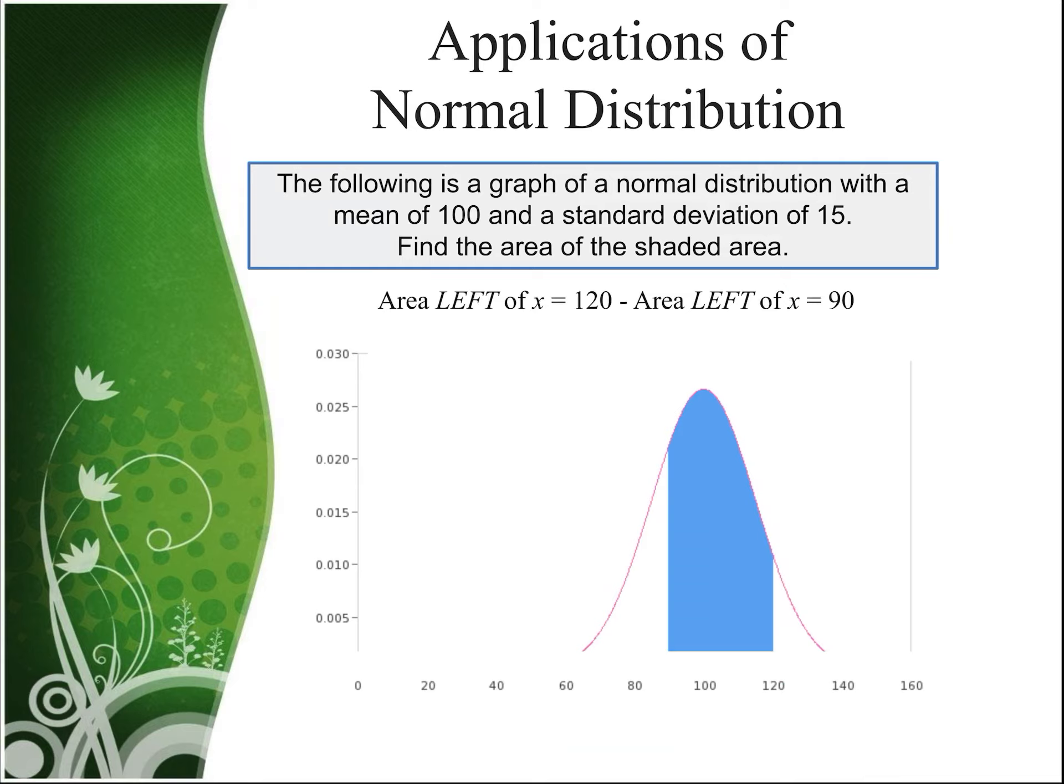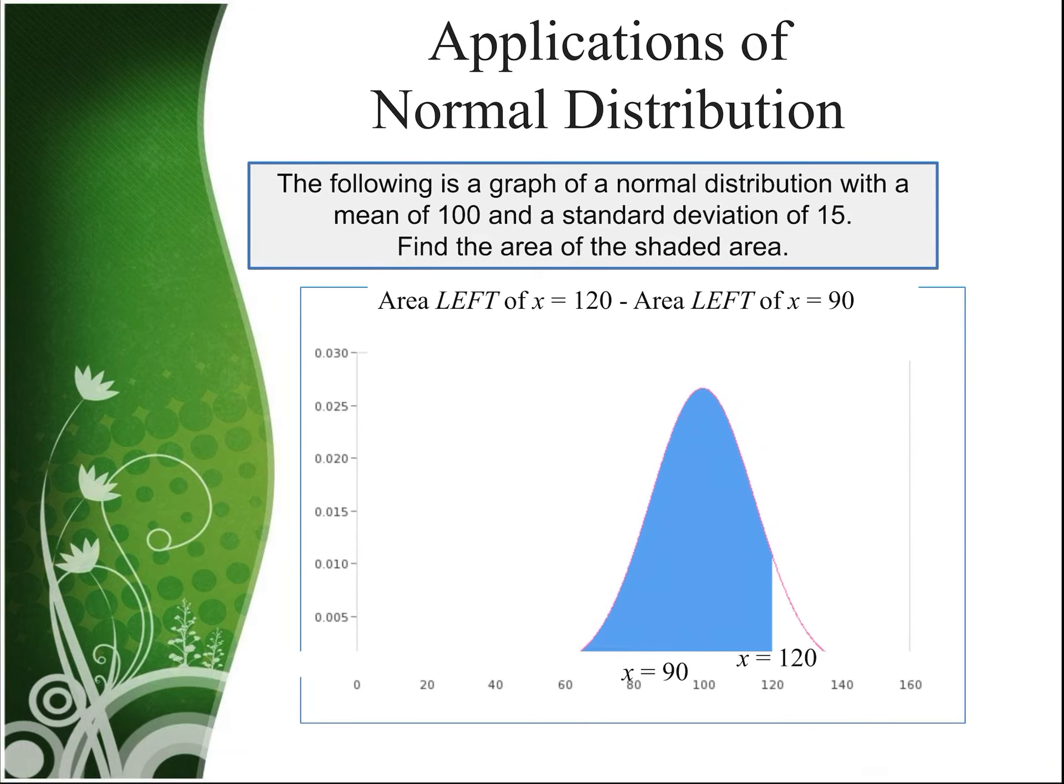Let's find an area between x equals 120 and x equals 90. Well, that would be finding the area to the left of x equals 120 and subtracting off the extra area that's to the left of x equals 90.